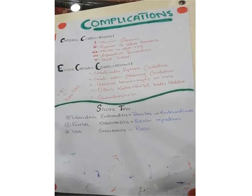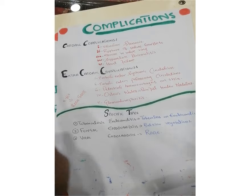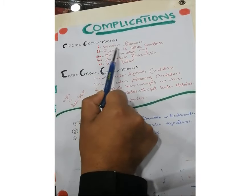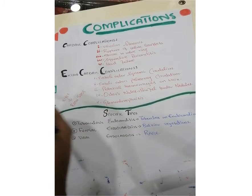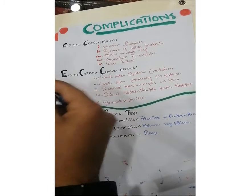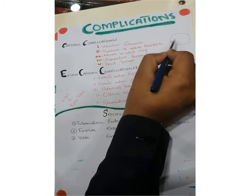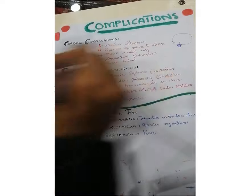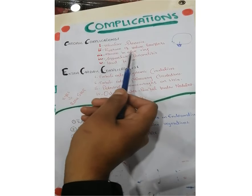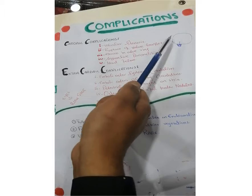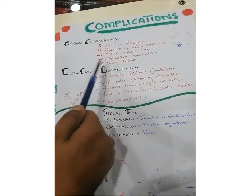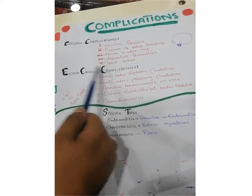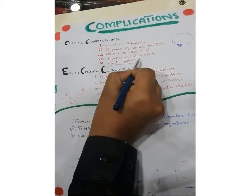The incidence of infective endocarditis has decreased due to the invention of antibiotics — it is now uncommon but not rare. Cardiac complications include: valvular stenosis due to vegetation; rupture of valve leaflets from large vegetations; abscess in the valve ring from bacterial pus formation; suppurative pericarditis; and heart failure as the final stage, when vegetations affect the heart musculature.